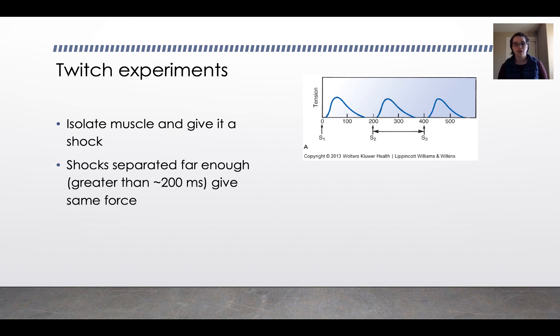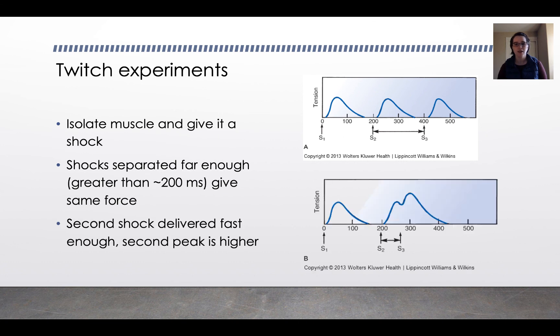If the shocks are separated far enough, so here they're separated by about 200 milliseconds, you'll get the same force every time you shock that isolated muscle. But if you deliver a second shock fast enough, you'll get a second peak that's higher, shown there on the bottom graph, where the delta T between the stimuli is less than 200 milliseconds and you get a higher second peak.